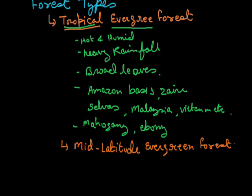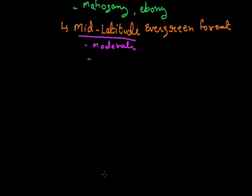Mid-latitude evergreen forest. Again this thing is clear by its name. Mid-latitude means it is not hot and not cold - moderate temperature is found here. Evergreen - same thing - heavy rainfall is found. So these are found in the mid-latitudinal areas of the world.